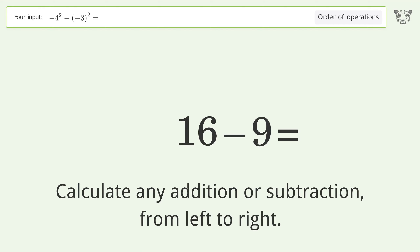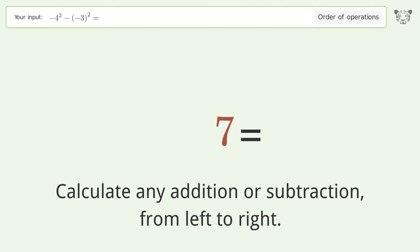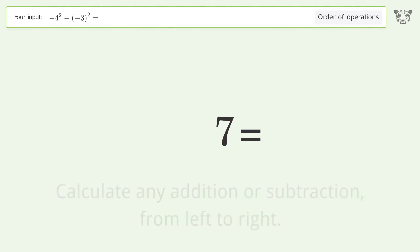Next, calculate any addition or subtraction from left to right. 16 minus 9 equals 7. And so the final result is 7.